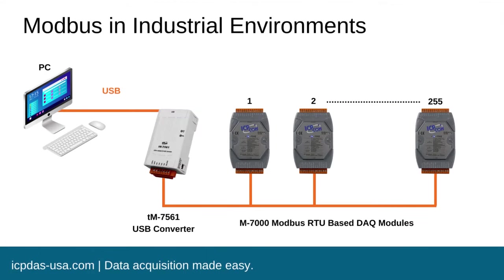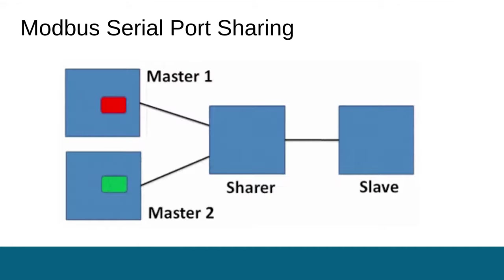In the industrial production industry, Modbus is the most extensively used network protocol. The most typical use case is communication between a sensor, programmable logic controller, or programmable automation controller in an HMI or SCADA system.